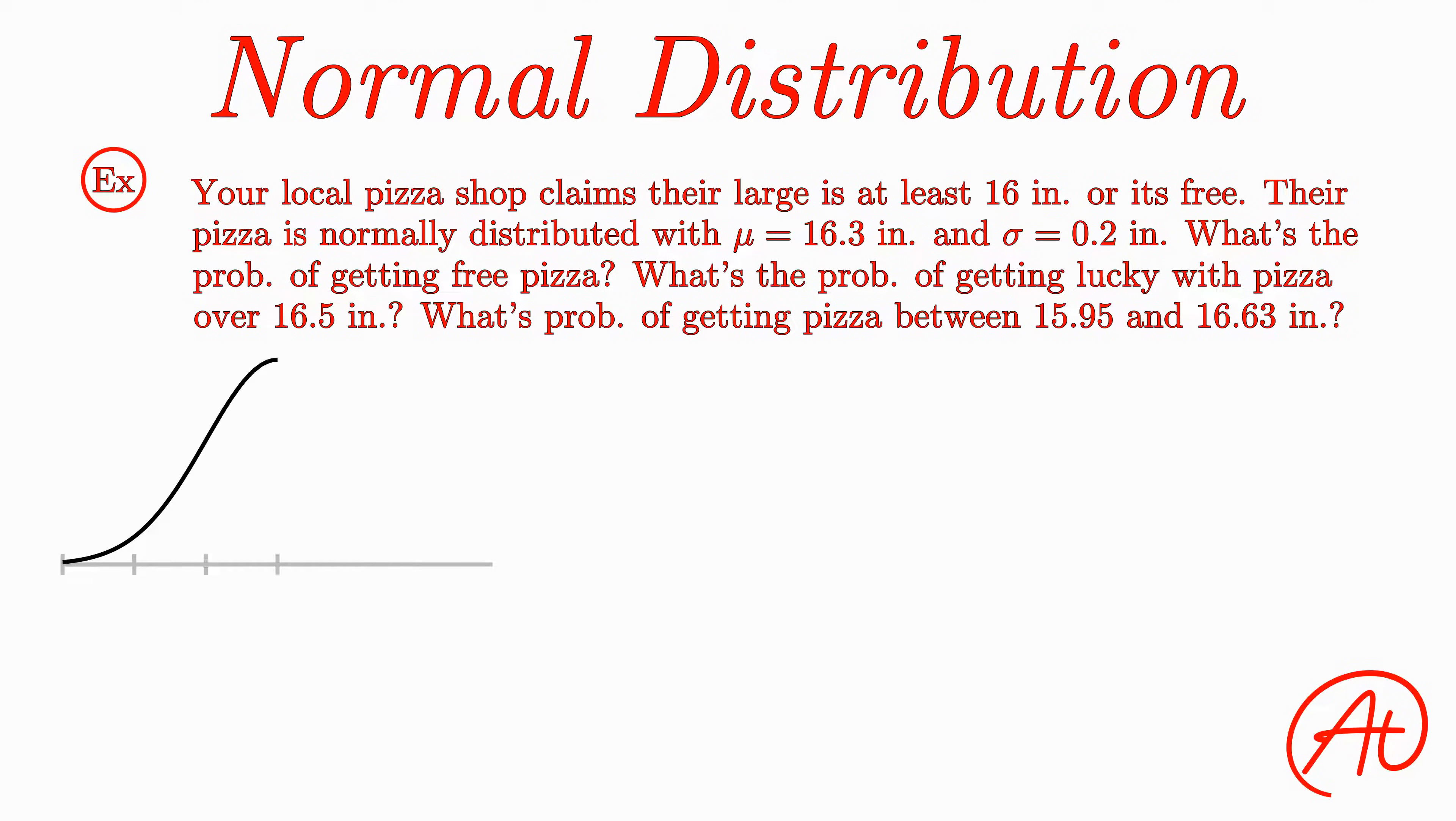Okay, first, let's draw our normal distribution centered at the mean of 16.3 inches. And we want to find the probability of getting a pizza that is less than 16 inches, which looks like this. Now our first step for these problems is always going to be standardize our distribution. Using our z-score equation and plugging in our data point of 16, we get 16 minus 16.3 divided by 0.2, or negative 0.3 over 0.2, which gives us a z-score of negative 1.5.